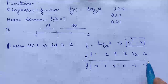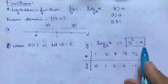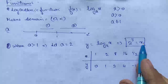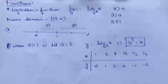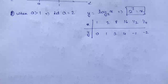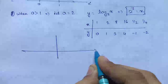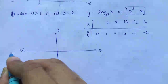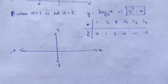And if y equals negative infinity, this thing will equal 0. So we will also try to plot that on the graph. Let this be the positive x-axis, positive y-axis, negative x and negative y-axis.